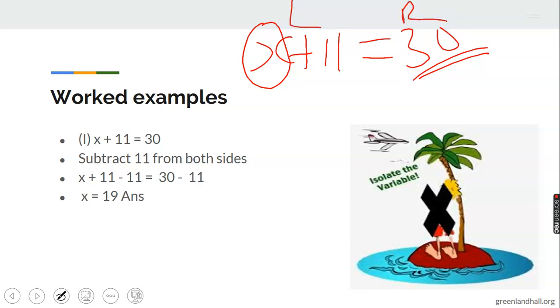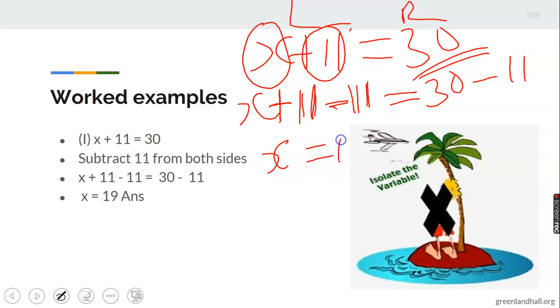I'm going to subtract 11 from both sides - this is my left, this is my right. In an algebraic equation, whatever you do to the left you do to the right. So we'll have x plus 11 minus 11 equals 30 minus 11. Why did I use minus 11? Because I want 11 to go out so only x remains here. Plus 11 minus 11 gives me zero, so I'll have only x standing here. So x equals 19, because 30 minus 11 gives me 19.